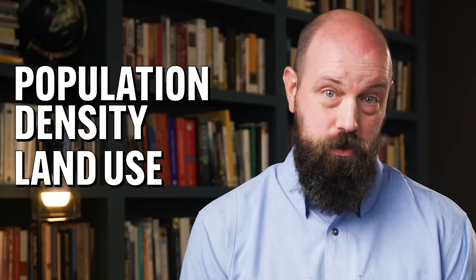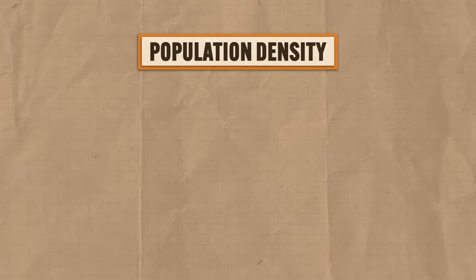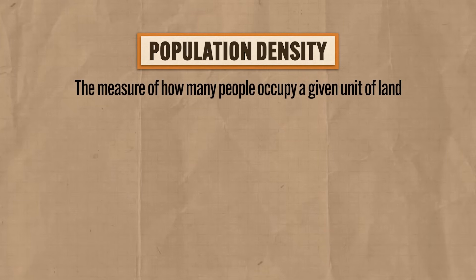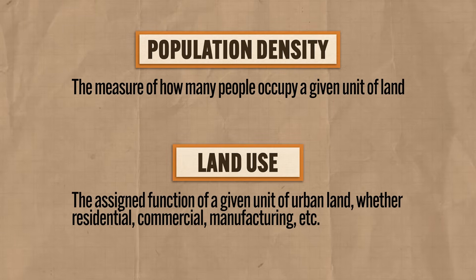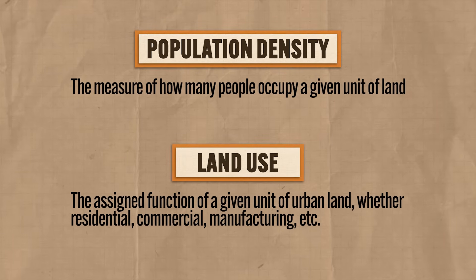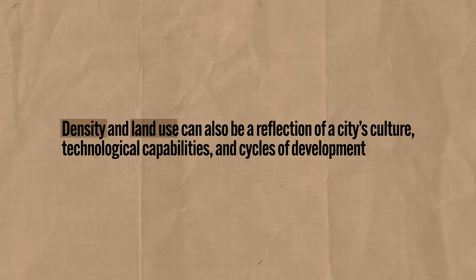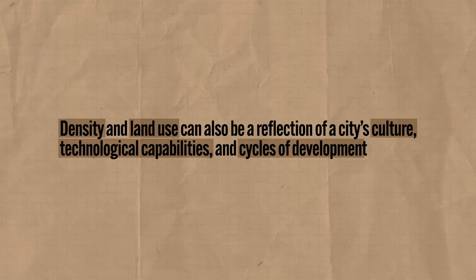Here we're looking at the internal shape of cities from a slightly different angle, namely population density and land use. Population density, if you remember from unit 2, is the measure of how many people occupy a given unit of land. And land use describes the assigned function of a given unit of urban land, whether it's residential, commercial, manufacturing, etc. Our city models tell us that differences in density and land use can be understood mainly as a function of differences in transportation or communication technology. But here we'll also consider that density and land use can be a reflection of a city's culture, technological capabilities, and cycles of development.